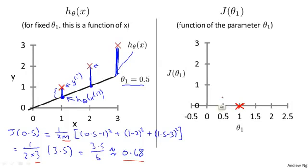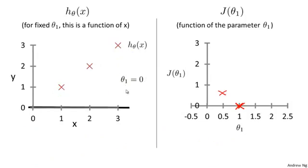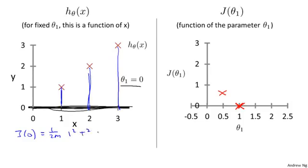So J(0.5) is about 0.58 — let's go ahead and plot that. Now let's do one more: if theta_1 equals 0, then h of x is just a flat horizontal line. Measuring the errors, J(0) equals 1 over 2m times (1 squared plus 2 squared plus 3 squared), which is 1/6 times 14, about 2.3. We can keep doing this for other values of theta_1.